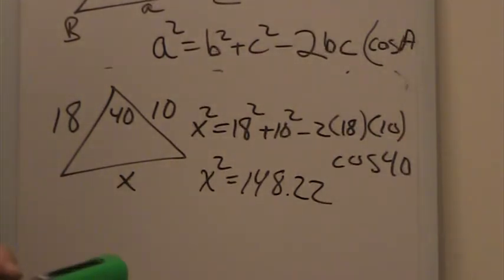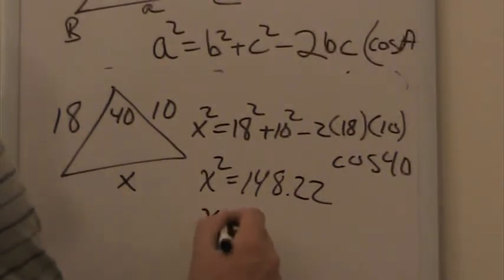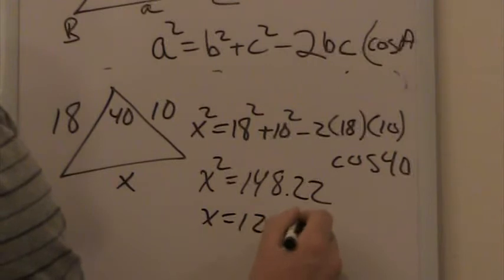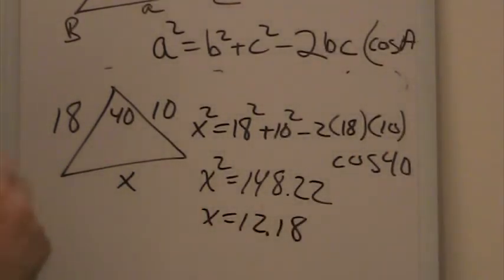Now to get x, you have to take the square root of that answer. Second square root, second answer, and that gives us 12.18 rounded off.